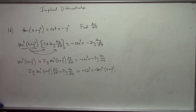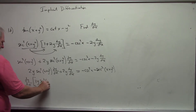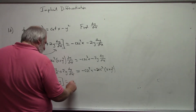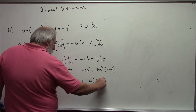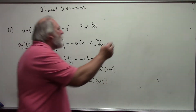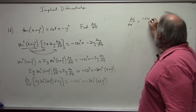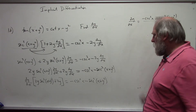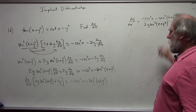Factoring out dy/dx: dy/dx · [2y·sec²(x + y²) + 2y] = −csc²(x) − sec²(x + y²). Therefore, dy/dx = [−csc²(x) − sec²(x + y²)] / [2y·sec²(x + y²) + 2y].